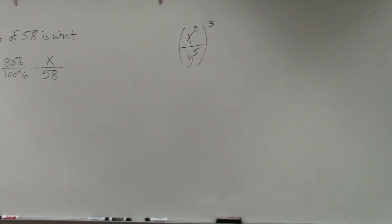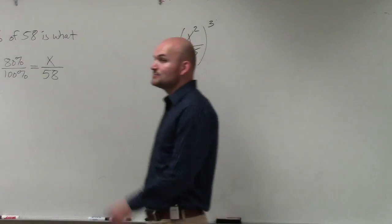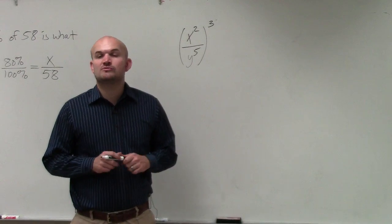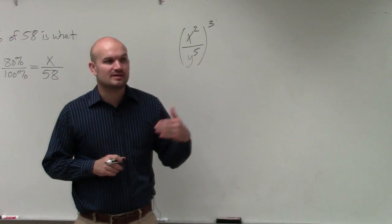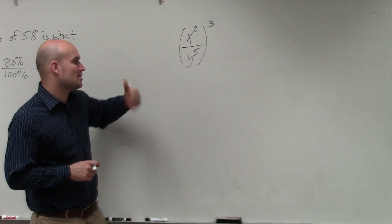In this example, I have x squared divided by y to the fifth, all raised to the third power. This rule of exponents is called the power to quotient rule. The power to quotient rule is the same thing that applies for power to quotient as does for power to product.